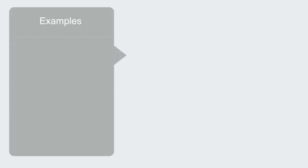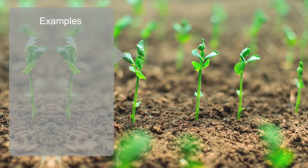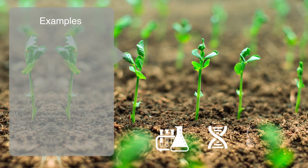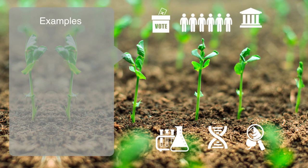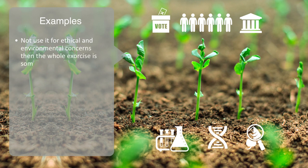To take some examples of this, we could think about the current state of genetic engineering. Scientists and engineers may spend decades researching and developing the technologies, but if society decides it will not adopt it for ethical and environmental concerns, then the whole exercise is somewhat futile, which is exactly what has happened in the European Union.